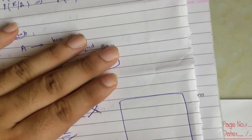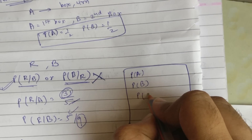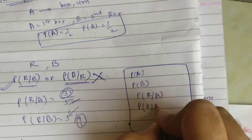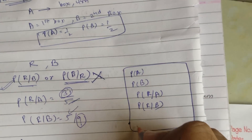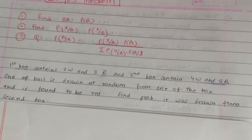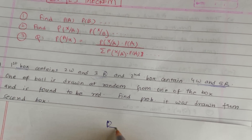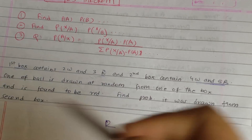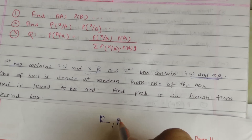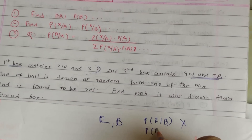Now we write out what we have: P(A), P(B), P(R|A), and P(R|B). The question asks: one ball is drawn and found to be red — find the probability it was drawn from the second box. Since we already found P(R|B), the question must be asking the opposite: P(B|R).